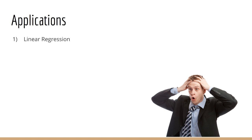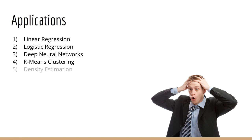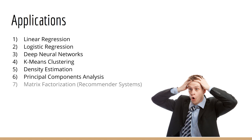Number one, linear regression. Number two, logistic regression. Number three, deep neural networks, and that pretty much includes everything in deep learning. Number four, k-means clustering. Number five, density estimation. Number six, principal components analysis. Number seven, matrix factorization, which is used in recommender systems. Pretty obvious from the name that it uses matrices.